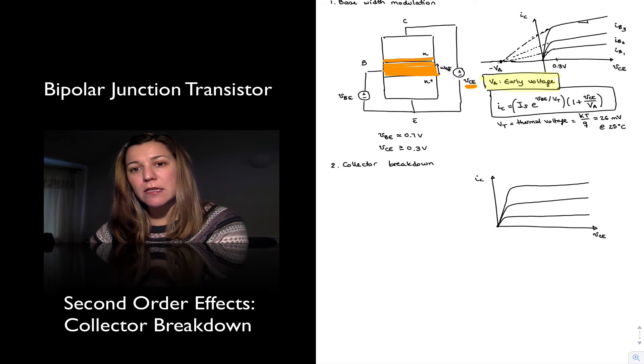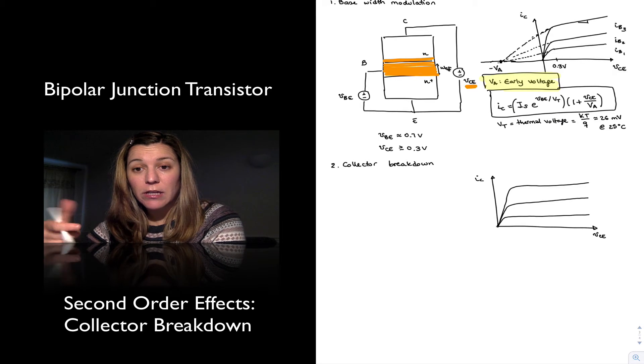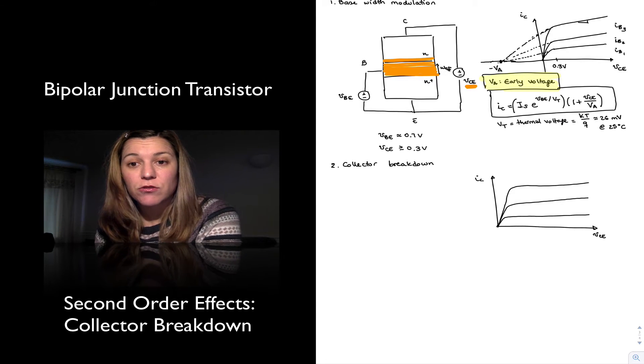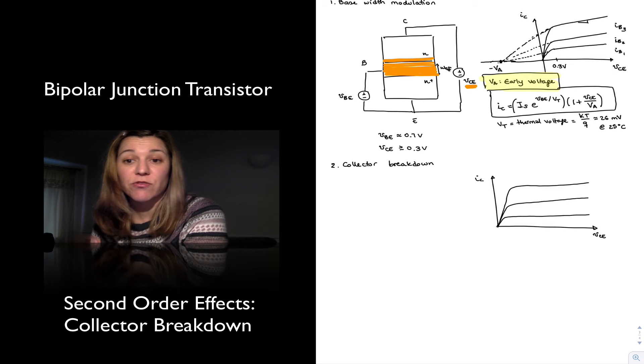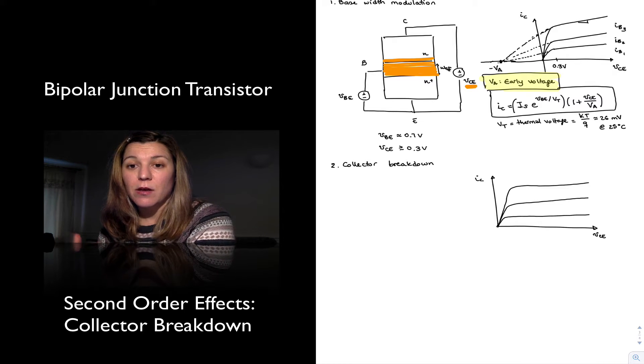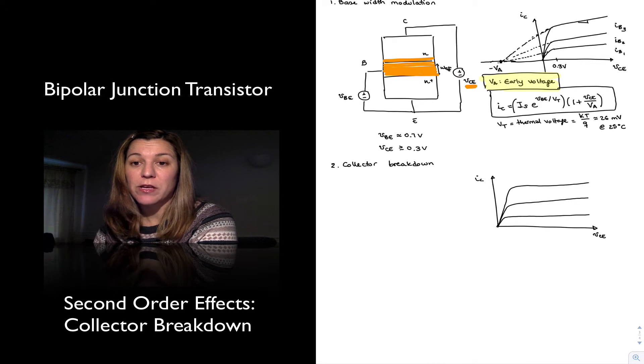In all reality, the collector base junction is a PN junction, and as any PN junction that is reverse biased, there is a breakdown voltage, meaning a maximum value of reverse bias,